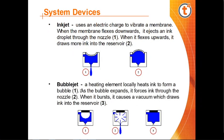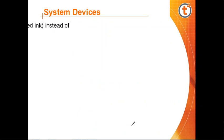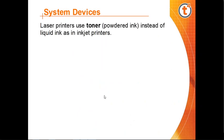In a bubble jet printer, a heating element locally heats the ink to form a bubble. As the bubble expands, it forces ink through the nozzle. When the bubble bursts, it causes a vacuum which draws more ink into the reservoir.